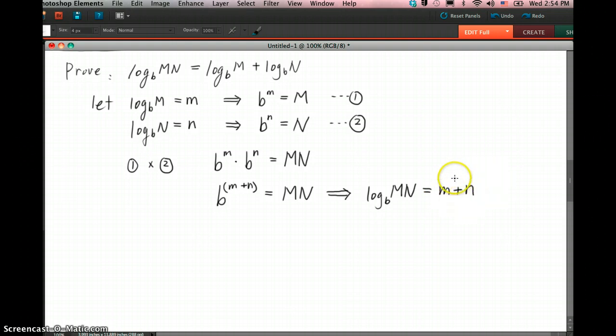Okay, if you replace back the m and n from here, so m equals log base b of M, n equals log base b of N, you would be getting log base b of MN equals log base b of M plus log base b of N.